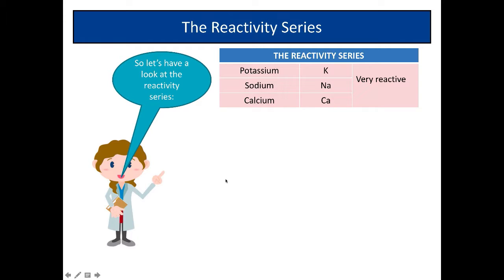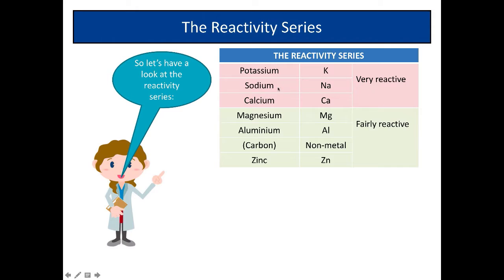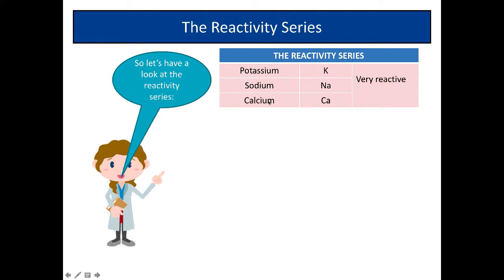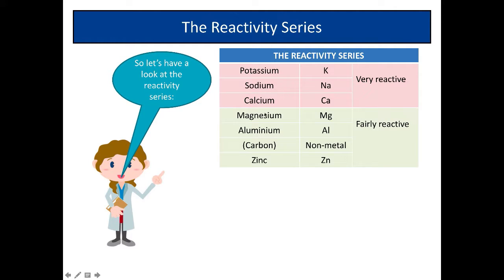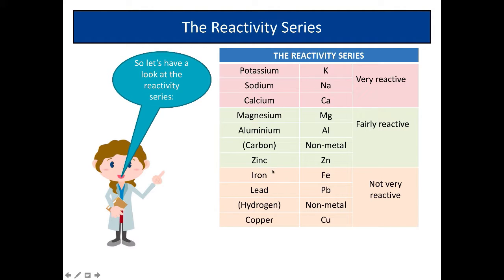So here's the reactivity series. Now the reactivity series does not include all the metals, just the more common ones. Very reactive at the top: potassium is the most reactive, then sodium and calcium. Then you've got some fairly reactive ones: magnesium, aluminium, and zinc. Then you've got iron, lead and copper, and these are not very reactive at all.